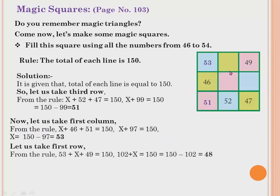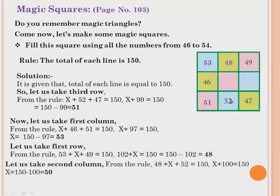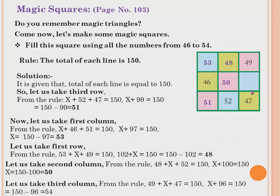Now let's take the first row: 53 + x + 49 = 150. So 53 + 49 = 102, and x = 150 − 102 = 48. For the second column: 48 + x + 42 = 150, so 48 + 42 = 90... giving x = 50. Left is the last column: 49 + x + 47 = 150, so x = 150 − 96 = 54. Now add any column or row and the total will be 150.